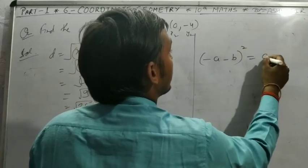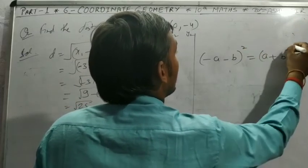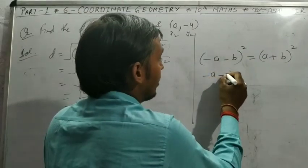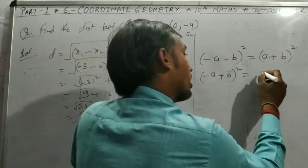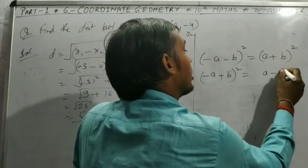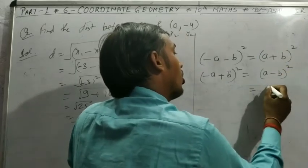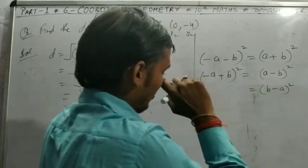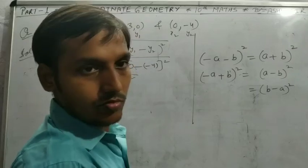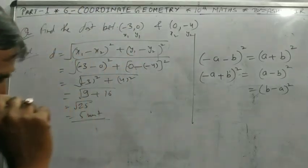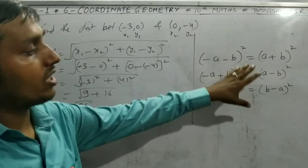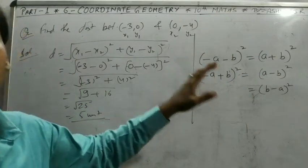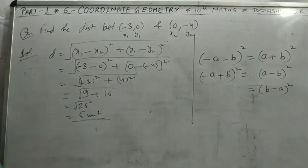Remember: if you write (−a − b)², that equals (a + b)². If you write (−a + b)², that equals (a − b)² or (b − a)² — all three are equal. Don't be confused; use this concept to solve questions more easily. Pause the video and note down.